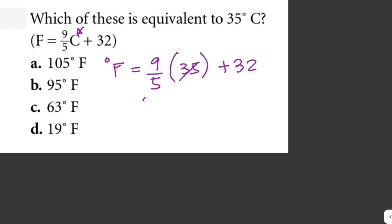Okay, 35 is divisible by 5, so this is just times 7. So 9 times 7 is just 63 plus 32. Therefore, this is just equivalent to 95 degrees Fahrenheit. So the answer here is letter B.